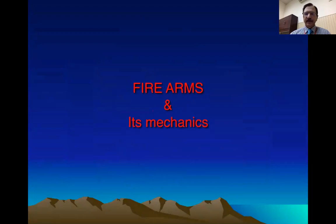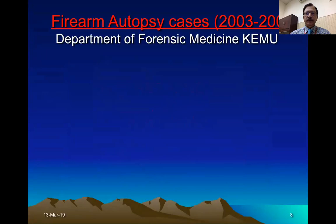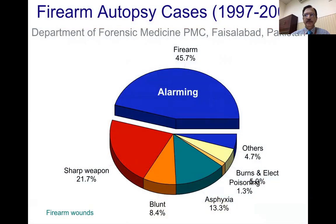We'll discuss firearms and their mechanics. A study was carried out in the Department of Forensic Medicine and Toxicology at Kangaro Medical University from 2003 to 2005. Out of 2,578 cases, the predominant cause of death was firearms — 736 cases. A similar study in Peshawar from 1997 to 2003 also concluded that firearm deaths were predominant, accounting for more than 45 percent of all deaths.